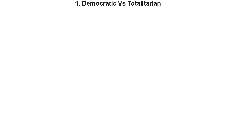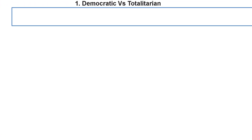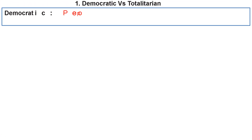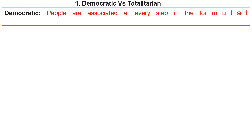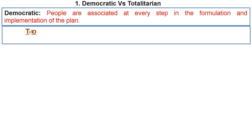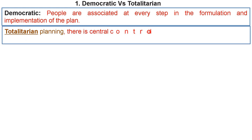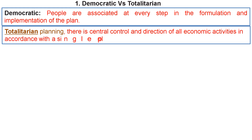Democratic versus totalitarian: In democratic planning, people are associated at every step in the formulation and implementation of the plan. In totalitarian planning, there is central control and direction of all economic activities in accordance with a single plan.